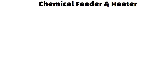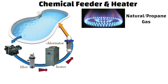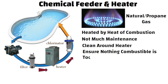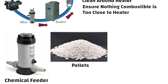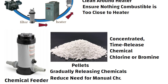Chemical Feeder and Heater. After passing through the filter, cleaned water flows through heaters and chemical feeders. A pool heater is usually powered by natural or propane gas. The water passes through a heat exchanger where it is heated by the heat of combustion. There is not much maintenance of a pool heater; the main concern is to clean around the heater regularly to ensure nothing combustible is too close to it. A chemical feeder is a tank that may hold pellets or another type of concentrated time-release chemical, usually chlorine or bromine. By gradually releasing chemicals into the pool water, they reduce the need for manual chemical balancing.